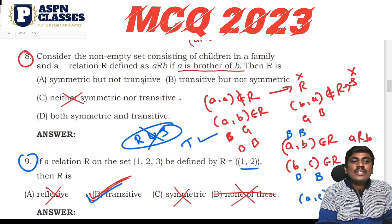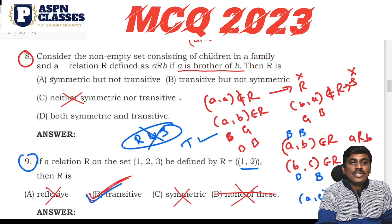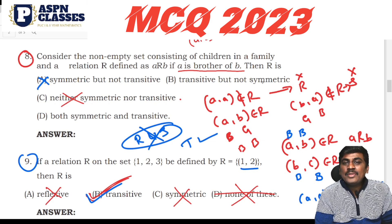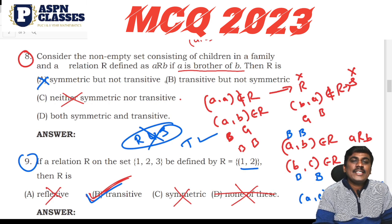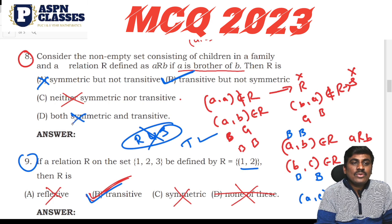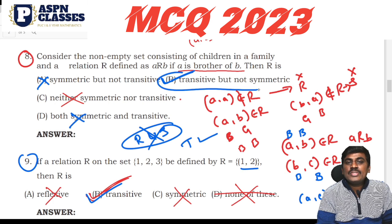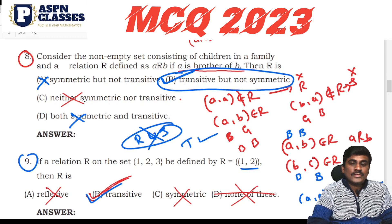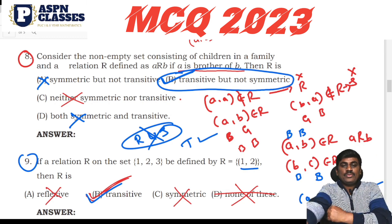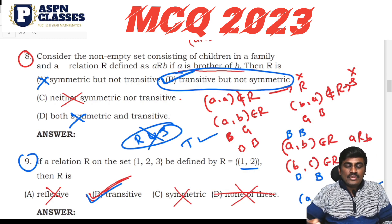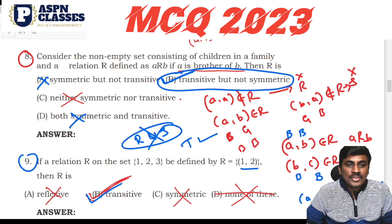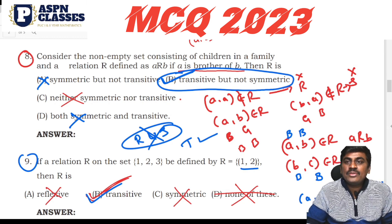So the relation is symmetric but not transitive — that option is wrong. Transitive but not symmetric — yes, that is the correct answer. So the correct option is transitive but not symmetric. Don't forget this conclusion.